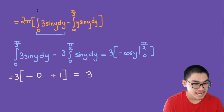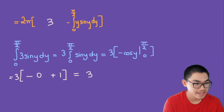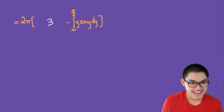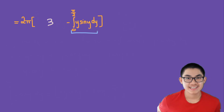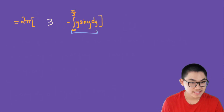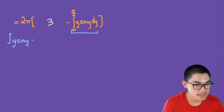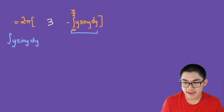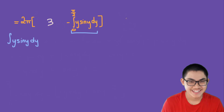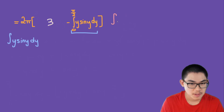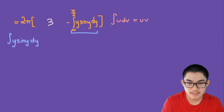Now for the second integral, we need the antiderivative of y·sin(y) dy, which requires integration by parts. The formula for integration by parts is: ∫u dv = u·v − ∫v du.